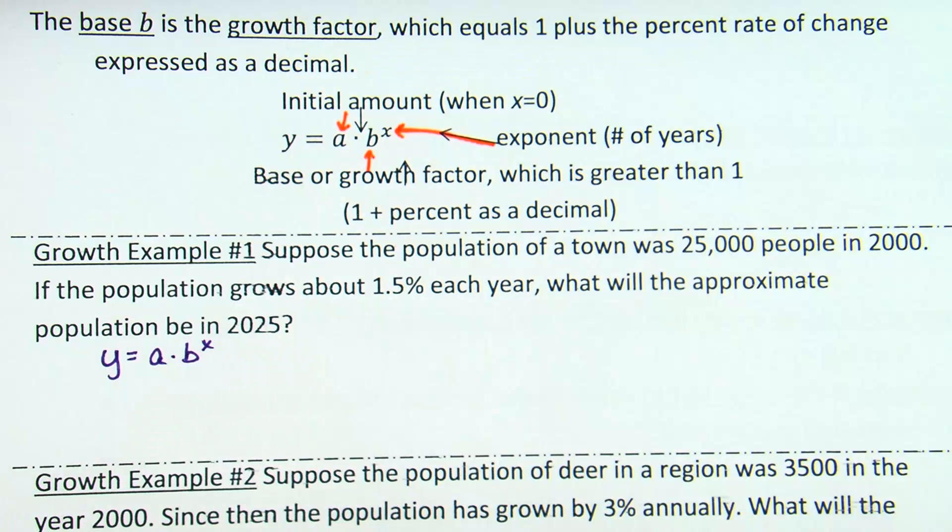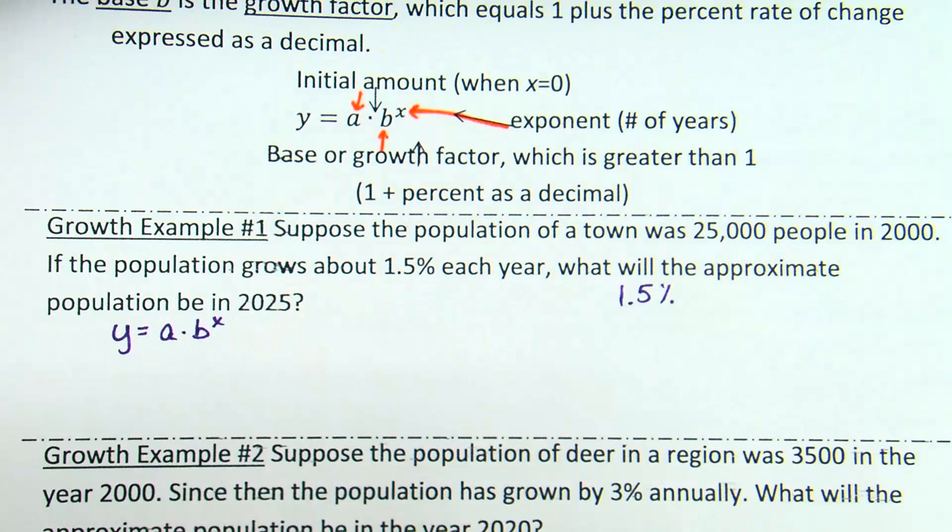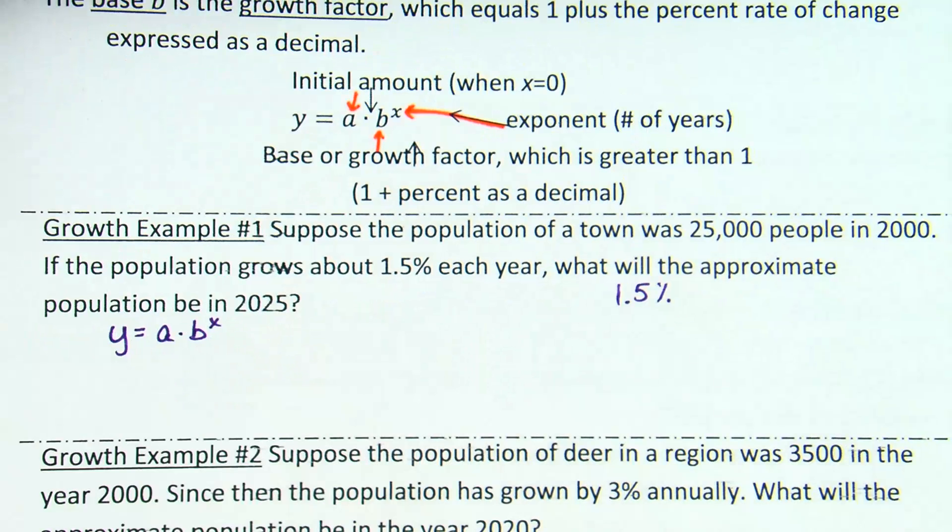Okay, so 1.5% each year, which when we do an equation like this, how do we express a percent as a decimal? Yeah, because we take the decimal. Well, if it's 1.5%. Okay, there we go. So if we move, basically, it's moving the decimal two places left, yes?